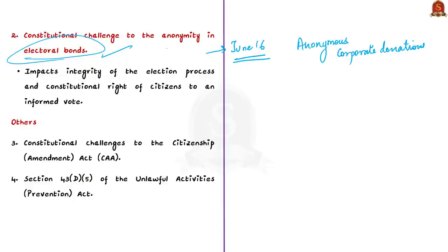Particularly, the anonymity clause of the Electoral Bond Scheme has been challenged, as it hinders the informed vote. Despite this, the Supreme Court has only passed two interim orders and has not accorded a full hearing to this constitutional challenge. Other examples include constitutional challenges to the Citizenship Amendment Act and challenges regarding the Unlawful Activities Prevention Act. There are many such cases dealing with questions about state power and accountability still pending with the Supreme Court.